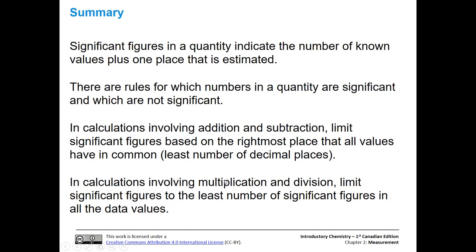To summarize: significant figures indicate the number of known values plus one estimated place. We have rules for determining which digits in a quantity are significant, with zeros being the trickiest part. In calculations involving addition and subtraction, we limit to the lowest number of decimal places. In calculations involving multiplication and division, we limit to the least number of sig figs among all the data values.